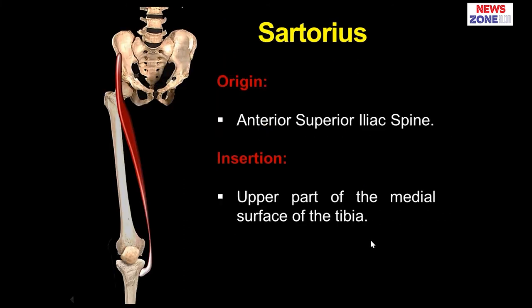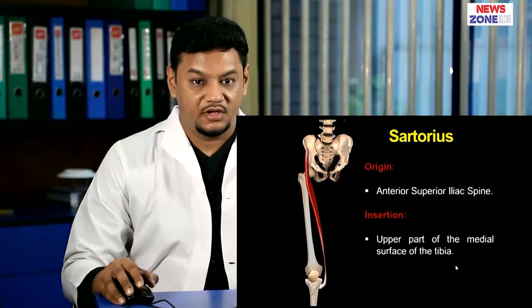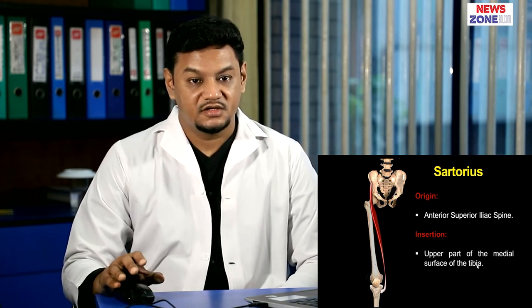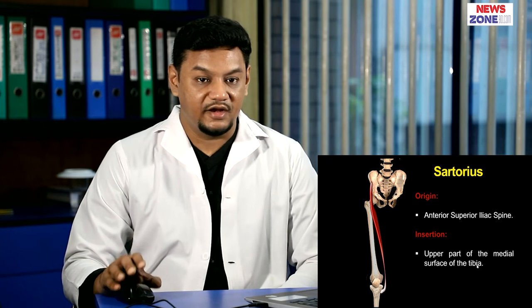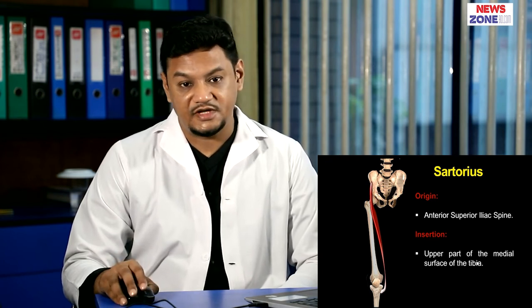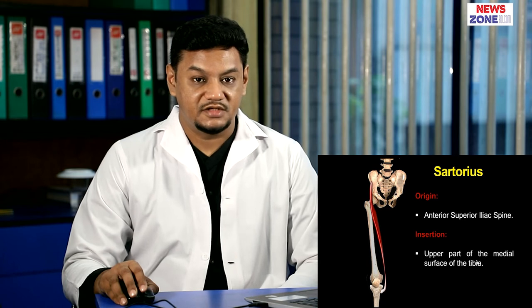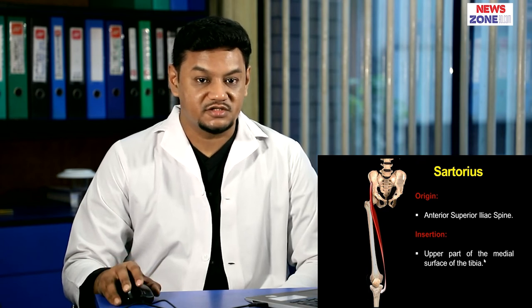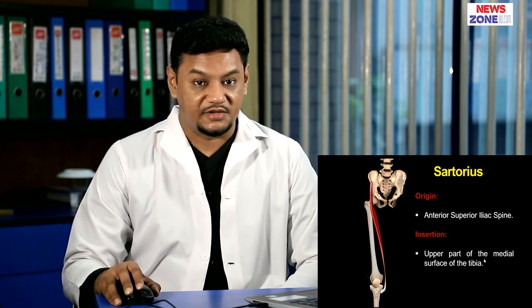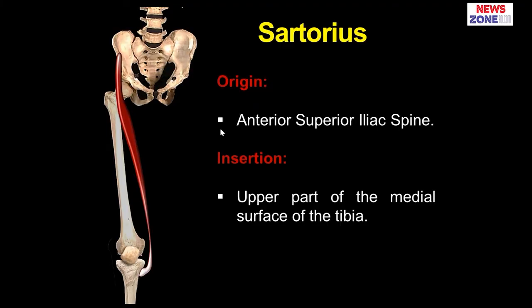One of the most important muscles is the sartorius. Sartorius muscle is the longest muscle of the body — strap-like and covering a very large area of the thigh. It comes from the hip bone and goes to the tibia, meaning it crosses two joints: the hip joint and the knee joint. The origin of the sartorius is from the anterior superior iliac spine and the insertion is at the upper part of the medial surface of the tibia.